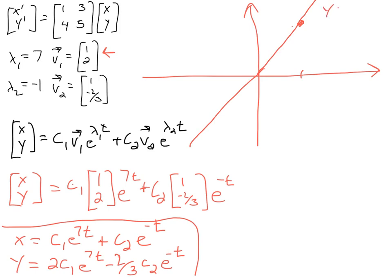stay on the line y = 2x. And because that eigenvalue of 7 is positive, these solutions are going to head away from the origin. So I'll put some arrows here showing they move away from the origin.